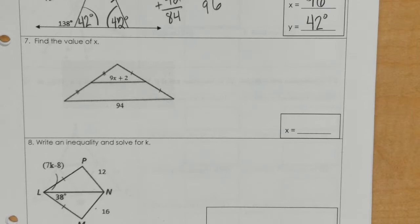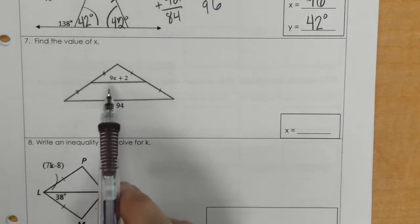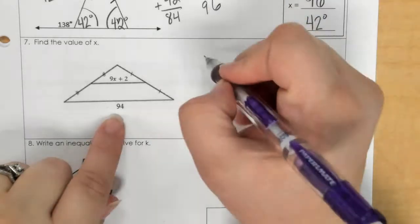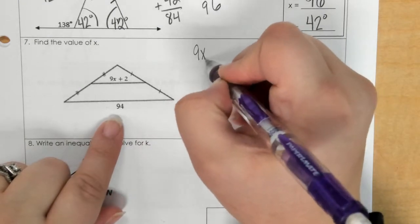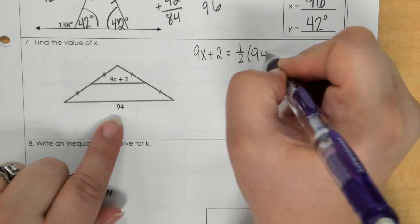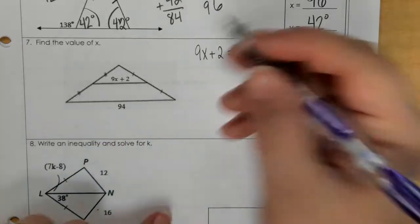Number 7, this segment that's inside of the triangle is known as the mid-segment. It is half of 94. And so what I would do is I would take the 9x plus 2, and then I would do half of 94, and then I could solve it.